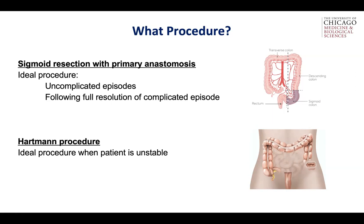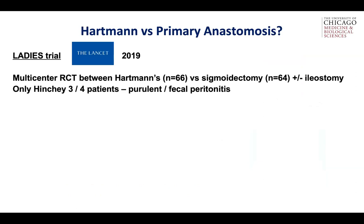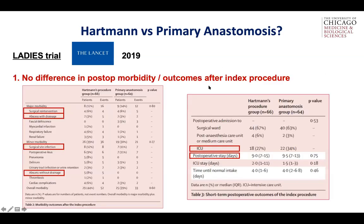What about the patients in between — those with persistent abscesses or who come in stable but maybe have feculent peritonitis and are not crashing? This has been well studied. The most recent multicenter trial included patients with Hinchey 3 or 4 only — Hinchey 1 and 2 were excluded — and was a randomized controlled trial between Hartmann's and sigmoid resection plus or minus an ileostomy, with the ileostomy decision left to the operating surgeon. There was no difference in postoperative morbidity or outcomes between Hartmann's versus sigmoid resection and primary anastomosis. Surgical intervention, abscess drainage, surgical site infection, ICU needs, and postoperative stay were all the same.